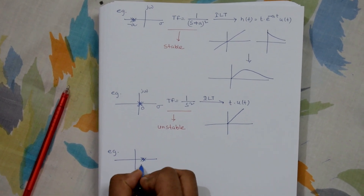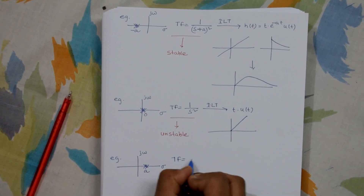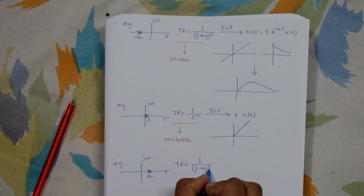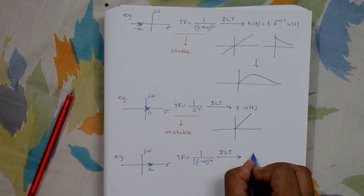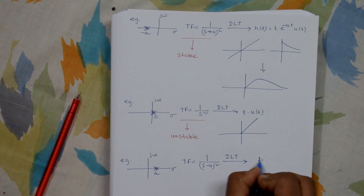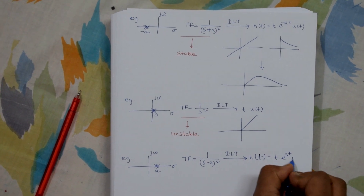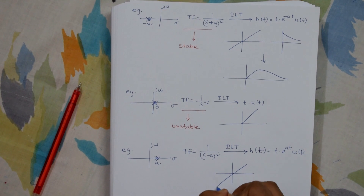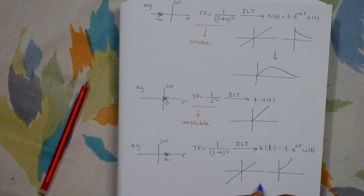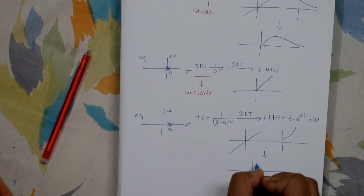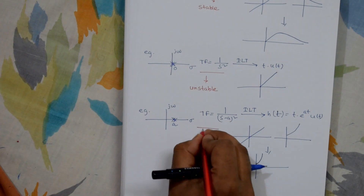Now let's take a repeated pole on the right-hand side of the s-plane. The transfer function is 1 by (s − a)². The inverse Laplace transform gives h(t) = t · e^(at) · u(t). Here t is the ramp function and e^(at) · u(t) is an exponentially increasing function. Combining these two gives an exponentially increasing function that is much steeper, so this is also an unstable one.